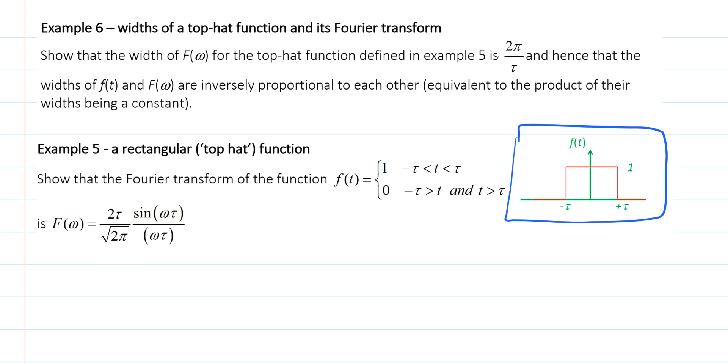It's clear that this function has a width between minus tau and plus tau. So we can write that its width, we'll call that delta t, is equal to 2 tau. Remember that this is a function of t and so the width is written in terms of delta t.